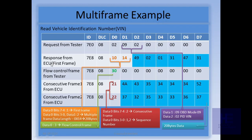When the ECU sends the First Frame to the sender, the sender acknowledges it using a Flow Control Frame — for example, 0x30, 0x00, 0x00. The block size and separation time minimum are both 0 here. The frame type 3 means it is a Flow Control Frame, and 0 is the flow status, meaning clear-to-send. Then the ECU will start sending the remaining data.